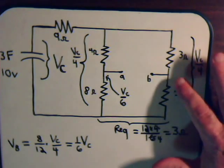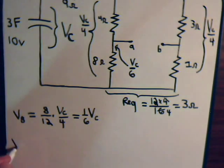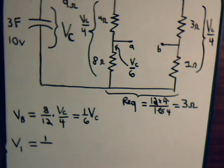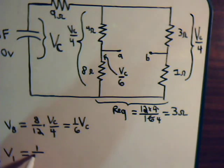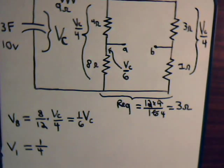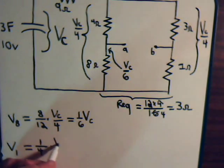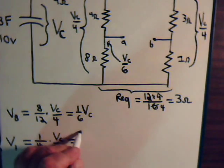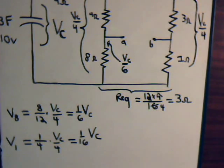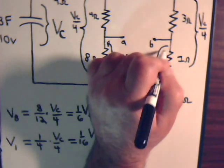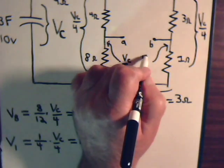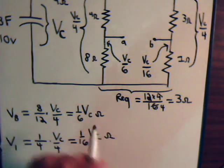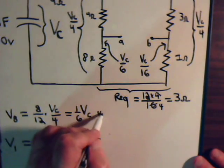Now we want to know the voltage drop across the 1-ohm resistor. V1 equals its value, 1, divided by all the resistors in series with it — 1 plus 3 is 4 — times the entire voltage drop, Vc/4. So it's 1/4 times Vc/4, which equals 1/16 Vc. So this point is Vc divided by 16 volts.